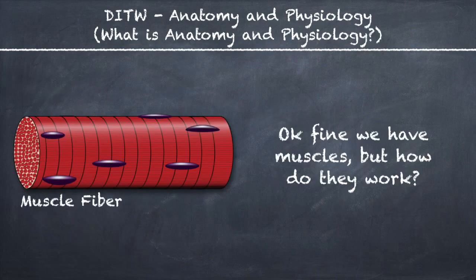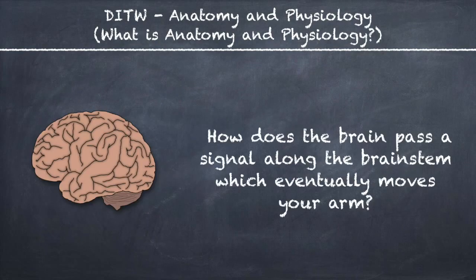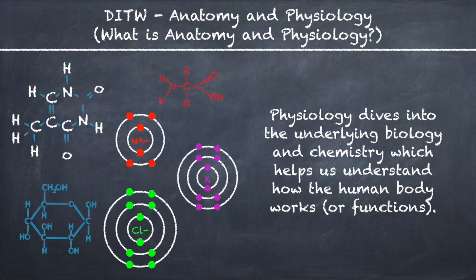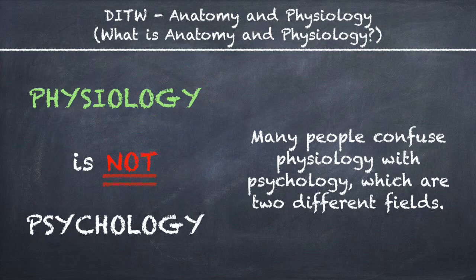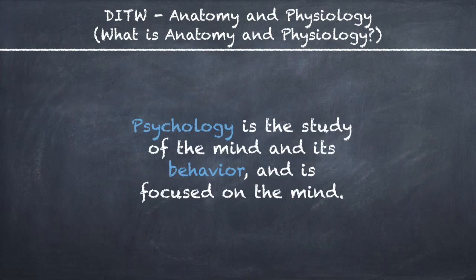Physiology is the field of study involved in the function of the human body. We have muscles, but how do they work? How does the brain pass a signal along the brain stem, which eventually moves your arm? Physiology dives into the underlying biology and chemistry, which helps us understand how the human body works or functions. Many people confuse physiology with psychology, which are two different fields. Psychology is the study of the mind and its behavior, and is focused on the mind.